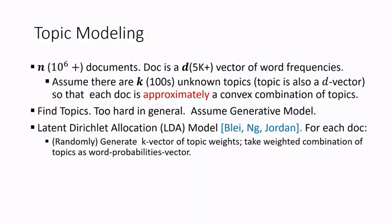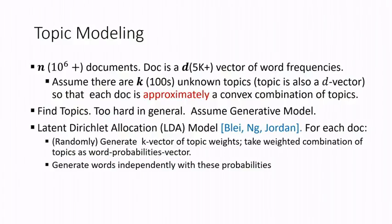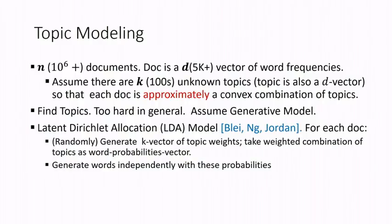In LDA, for each document you generate weights on each topic, take the weighted combination of topics (topics are word-frequency vectors), and then generate words independently with those weighted probabilities. Each document is generated as a bag of words with probabilities equal to the weighted combination of topic vectors.